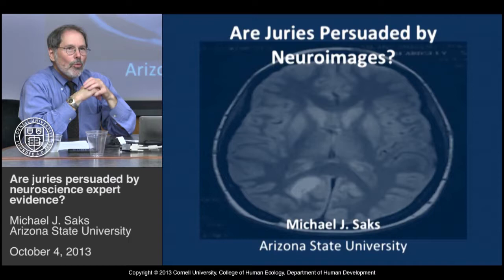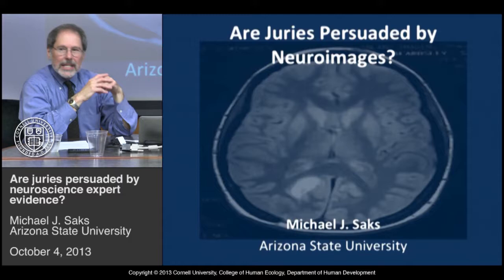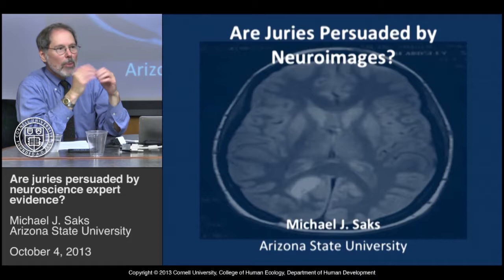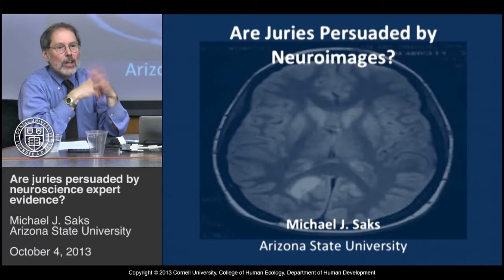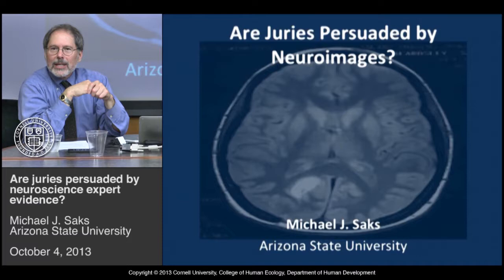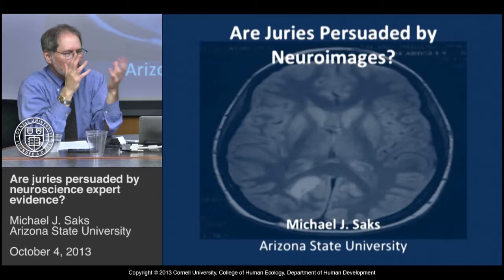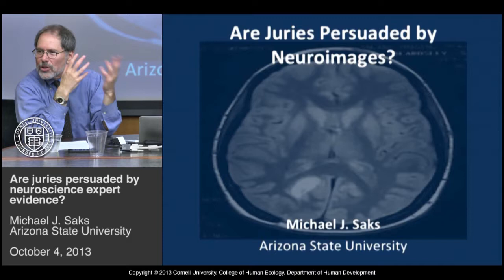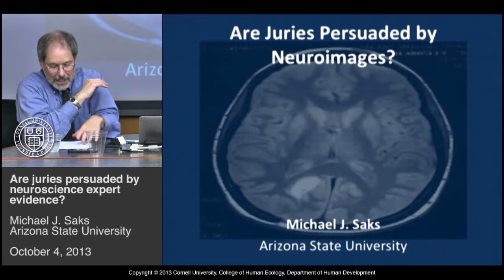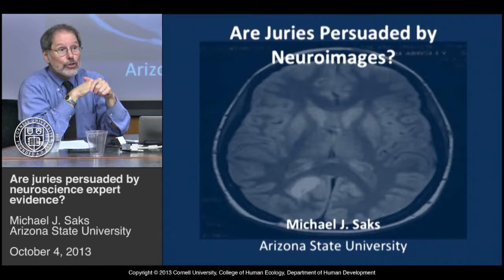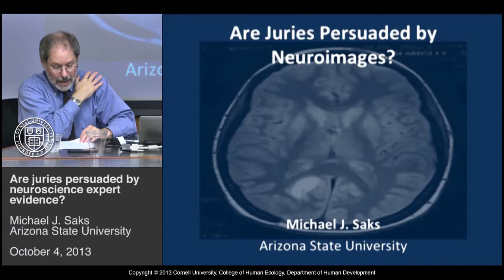Mike Gazzaniga was head of the Law and Neuroscience Research Network, funded by the MacArthur Foundation. Owen Jones has since taken that role. The network includes psychologists, neuroscientists, philosophers, and lawyers, all very interested in what fMRI can do. One thing they decided to investigate was how influential fMRI neuroimages are to juries. They asked me and a couple of colleagues to get involved.